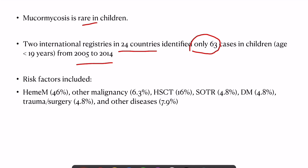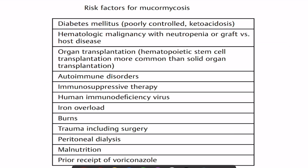In adults, the most common risk factor is poorly controlled diabetes, especially with ketoacidosis, followed by hematological malignancy, organ transplant, and autoimmune disorders. In COVID patients, the two important risk factors are diabetes mellitus and immunosuppressive therapy. Use of steroids results in higher blood sugar levels and in some patients also develops ketoacidosis, which could be an important reason why these patients are more prone to develop mucormycosis.